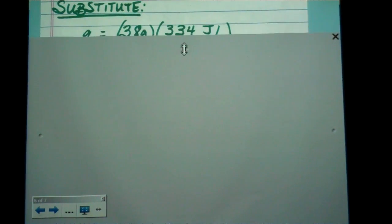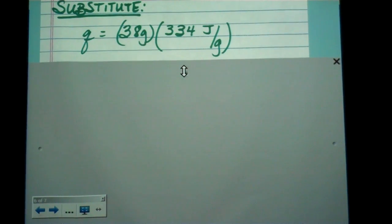Next step is to substitute. We put the numbers in. We have 38 grams, 334 joules per gram. We're trying to find the heat, the amount of joules. We know that the grams are going to cancel here, and we're going to be left with joules. So we're on the right track.